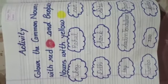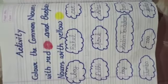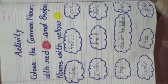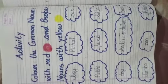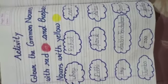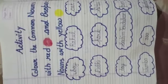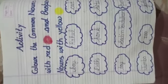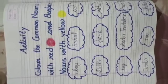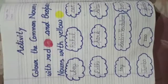Now we will do one activity. In this, what you have to do: you have to color the common nouns with red color and proper nouns with yellow color. I hope you will enjoy this. So the first word is given here: Boy. What is boy? Boy is a common noun or a proper noun? Boy is a common noun. So we will color it with red.